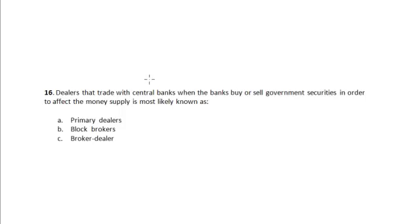The dealers that trade with the central bank when the bank buys or sells government securities in order to affect the money supply are most likely known as primary dealers. Now the dealers that act as brokers as well are known as broker-dealers, so they possess both the characteristics of a broker as well as a dealer.